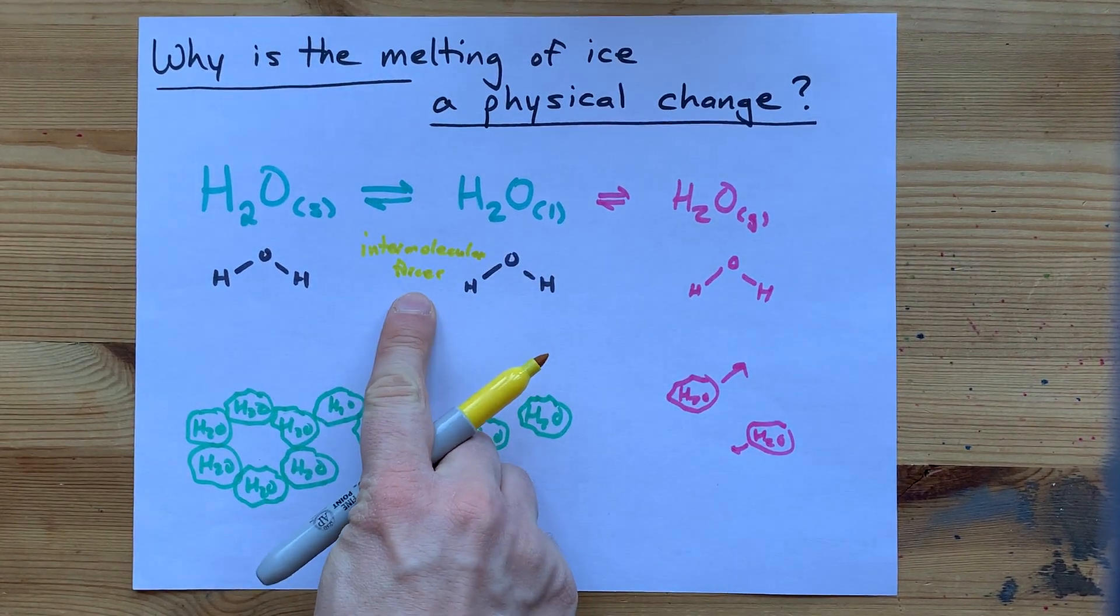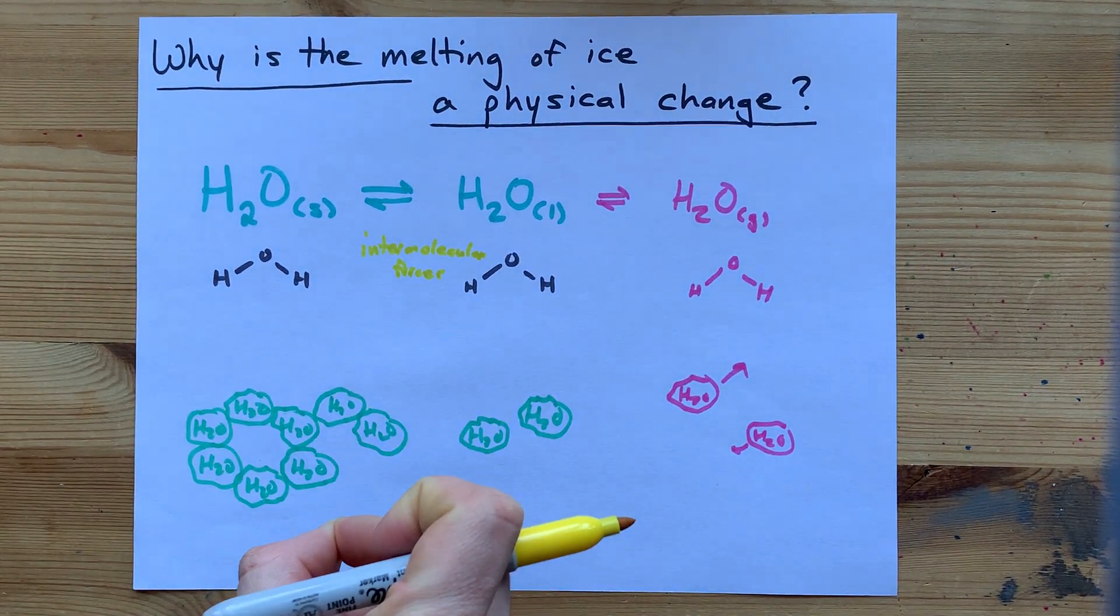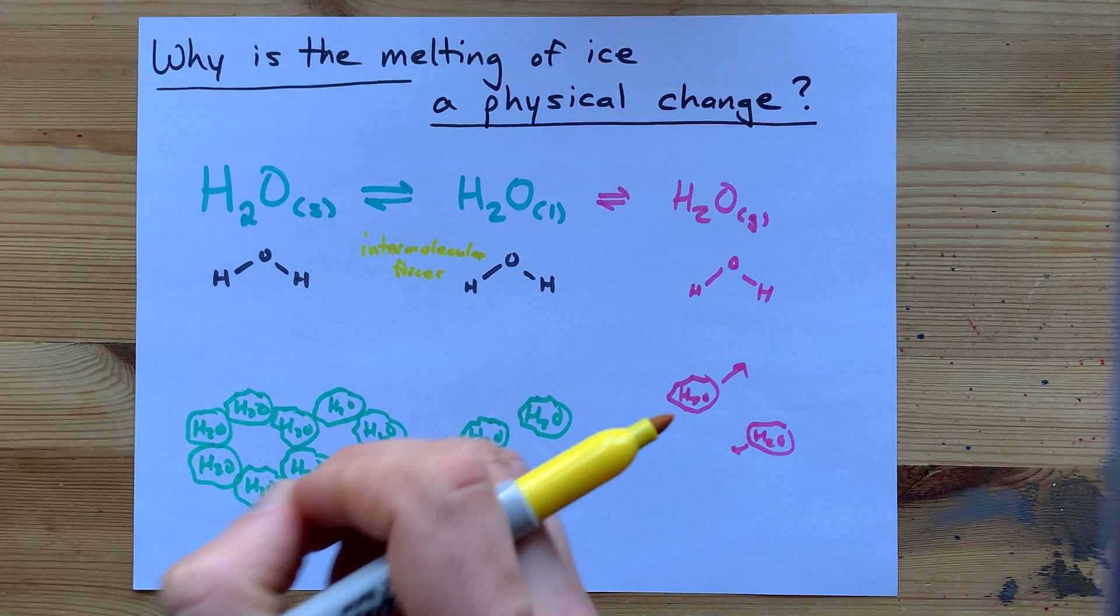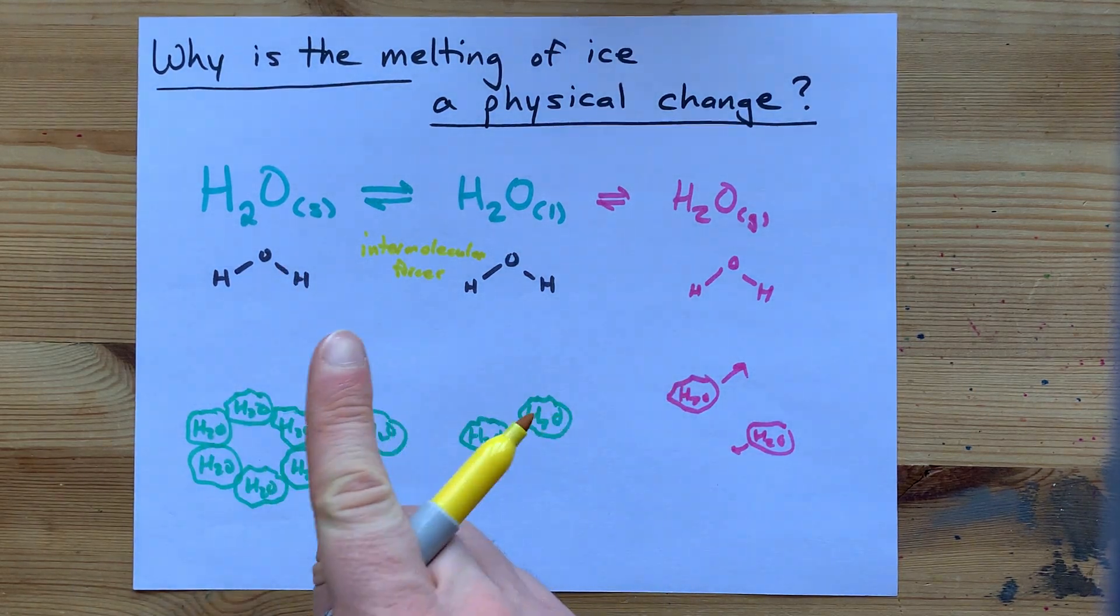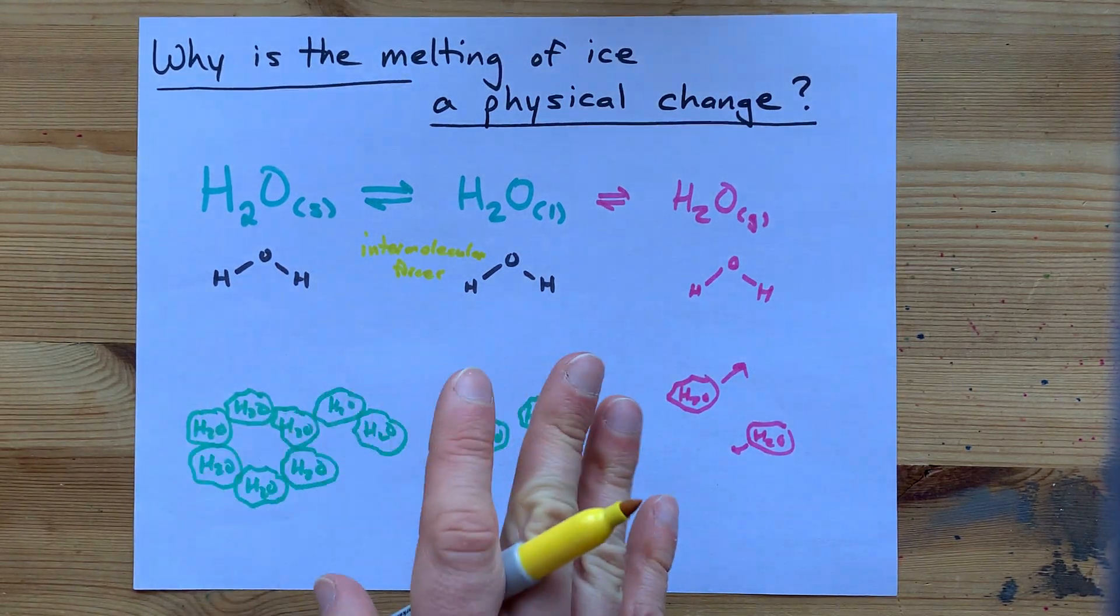These are attractions between the molecules that aren't true chemical bonds. Chemical bonds are a sharing of actual electrons.